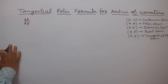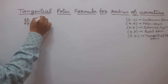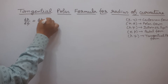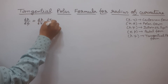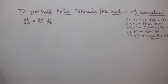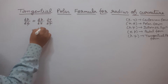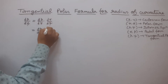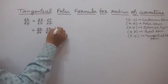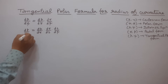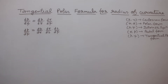So here we find out the formula for radius of curvature of tangential polar form. This can be written as dp/dψ is equal to dp/dr multiplied by dr/dψ. And this dr/dψ can be written as dr/ds multiplied by ds/dψ. So dp/dψ can be written as dp/dr multiplied by dr/ds multiplied by ds/dψ.